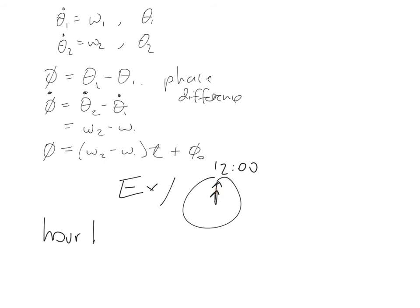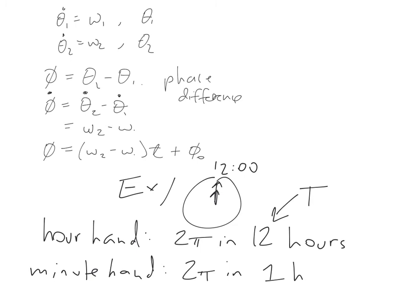Hour hand, 2 pi in 12 hours. This is capital T. And the minute hand goes through 2 pi in 1 hour. This is capital T.